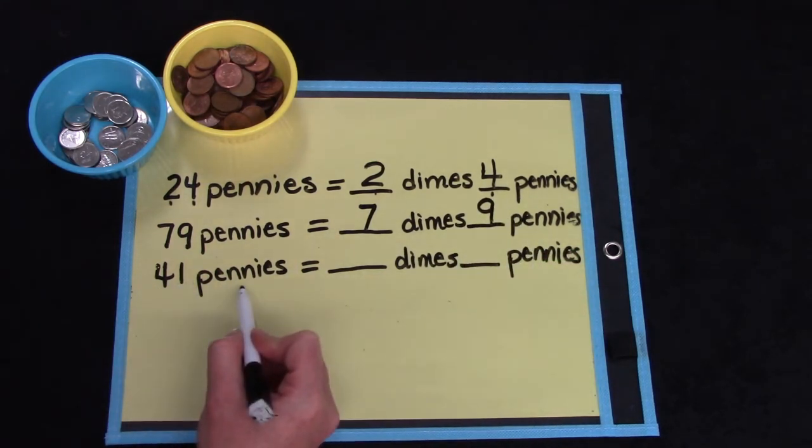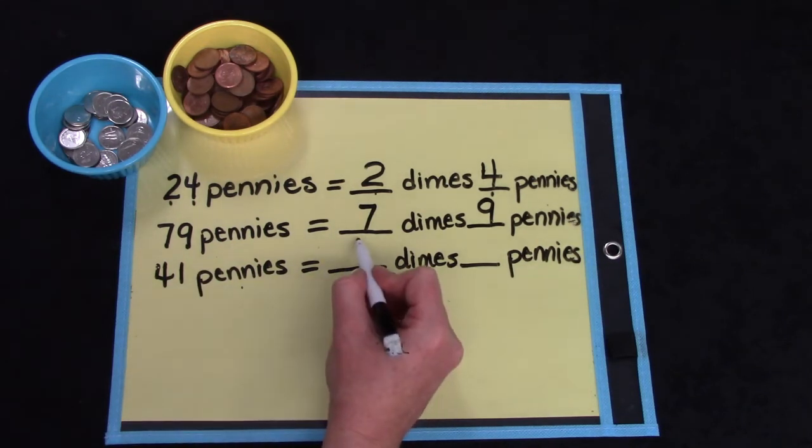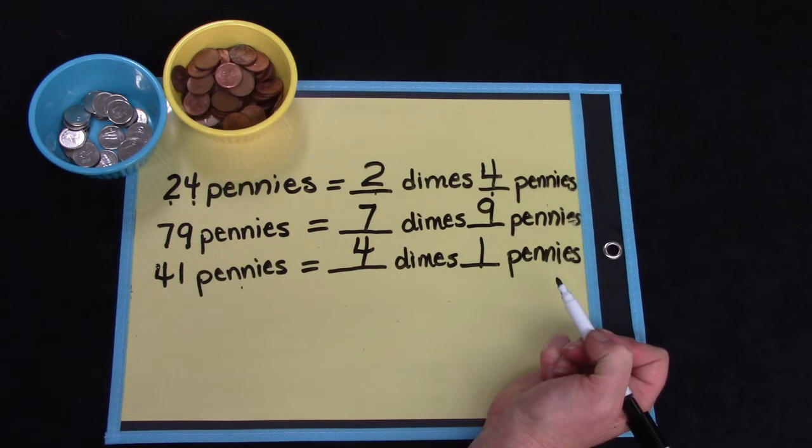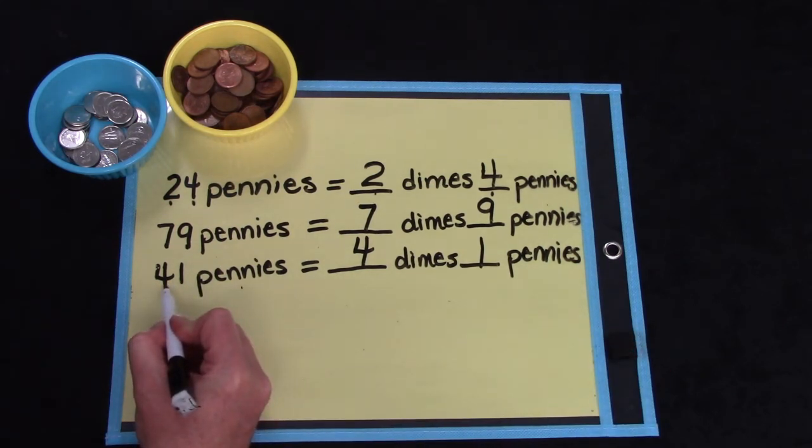What about 41 pennies? You're so smart. It is 4 dimes and 1 penny. 4 dimes because the 4 is in the tens place and that tells us how many groups of 10 or how many dimes.